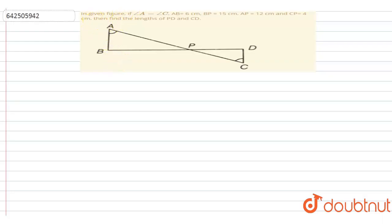Hello friends, the question says here, if angle A is equal to angle C, AB is equal to 6 cm, BP is 15 cm, AP is 12 cm, and CP is 4 cm, then find the length of PD and CD.